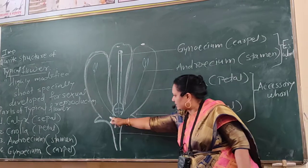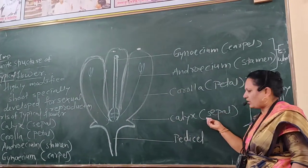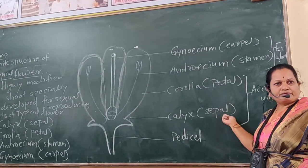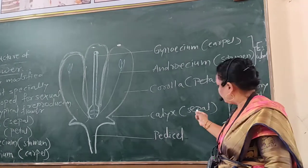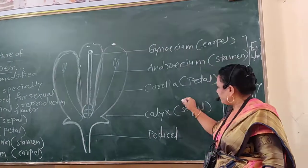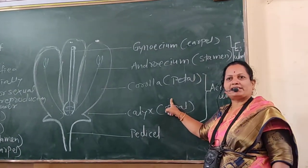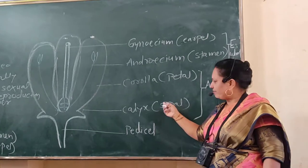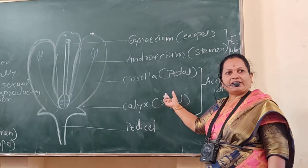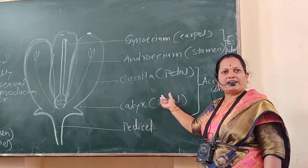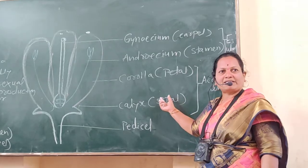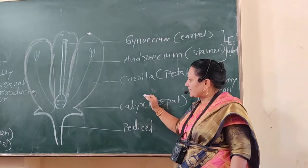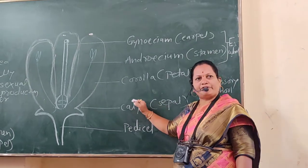Calyx consists of individual parts called sepals. When sepals are free, that condition is called polysepalous, and when sepals are united, that condition is called gamosepalous. The number of sepals differs in different flowers.